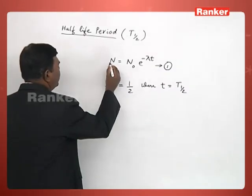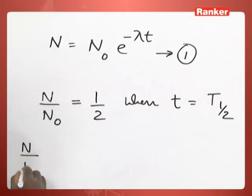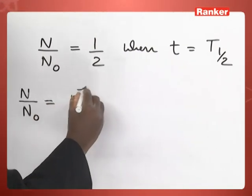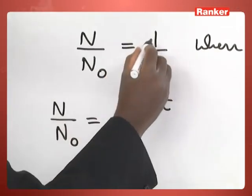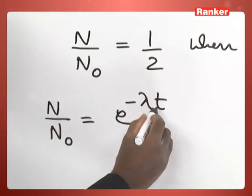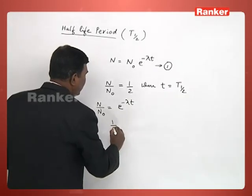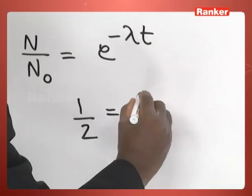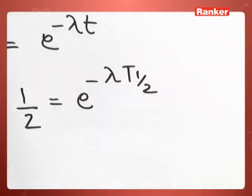In such case, if you substitute these values, equation 1 gives you N by N naught equal to e power minus lambda t. In place of N by N naught, we can substitute 1 by 2, and in place of t, we can substitute t half. So, this expression becomes 1 by 2 equal to e power minus lambda t half.